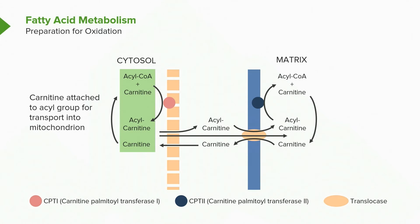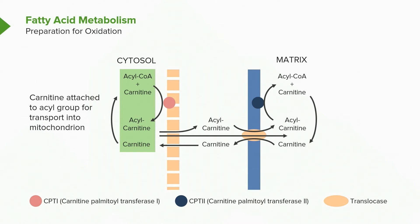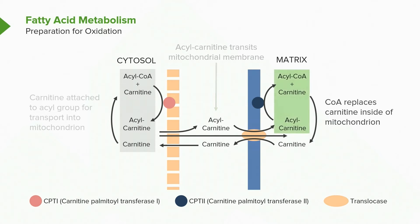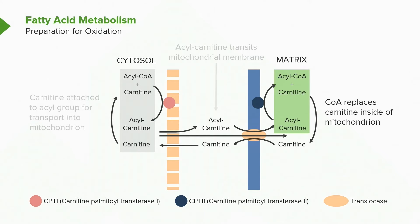The acyl-carnitine moves into the inter-membrane space — the space between the yellow and blue lines. A transfer protein then physically moves the acyl-carnitine into the mitochondrial matrix. Once inside the mitochondrion, the reverse process occurs: the CoA floating in the mitochondrion is attached to the acyl group and the carnitine is released. The carnitine ultimately makes it back out into the cytoplasm.